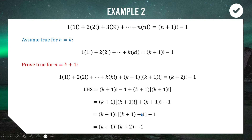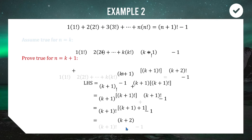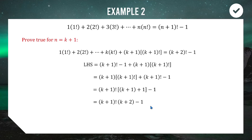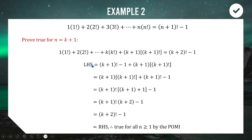Inside the bracket we have k+2, and (k+1)! times the next number k+2 becomes (k+2)! — just like 5! times 6 becomes 6!. So the expression simplifies to (k+2)! − 1, which is exactly the right-hand side we needed to prove. Therefore the statement is true for all n ≥ 1 by the principle of mathematical induction.